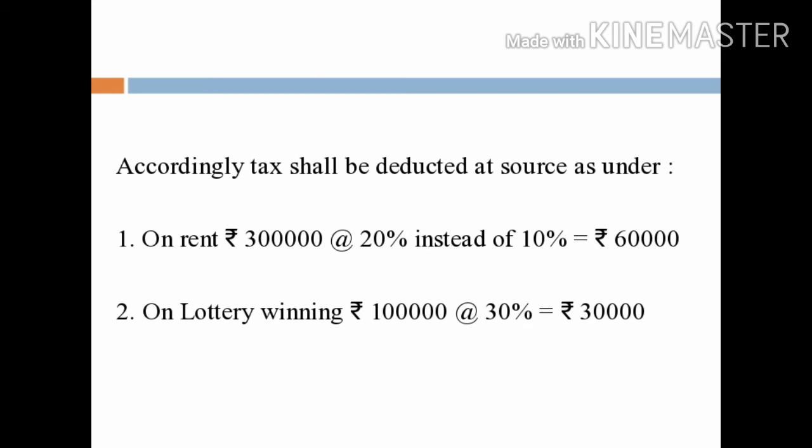Second income: lottery winnings of rupees 1,00,000. Under Section 194B, TDS on lottery winnings is applicable at the rate of 30% where the payment amount exceeds rupees 10,000. For the relevant year, the TDS rate is 30%, or 20% whichever is higher — so 30% is the higher rate.